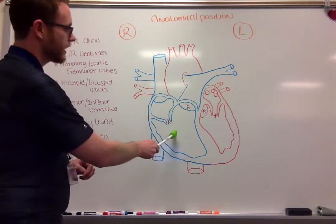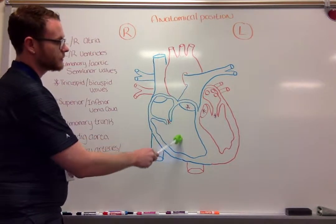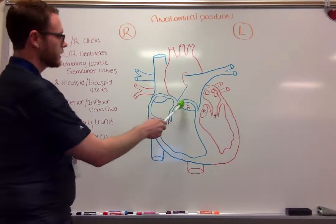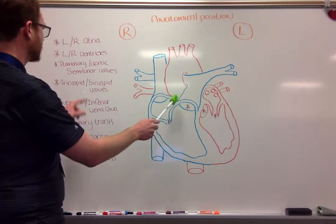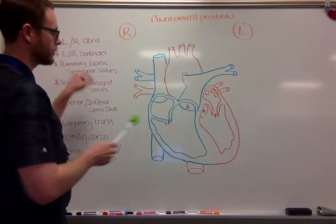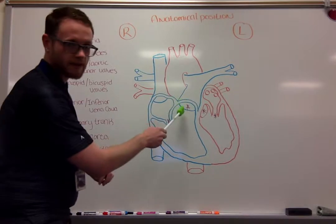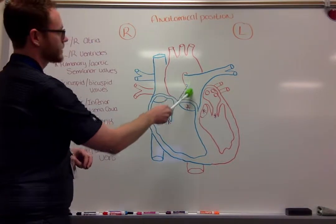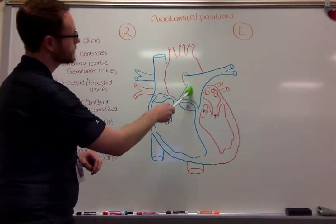From our right ventricle, we are going to be pushing that blood through our first semilunar valve — our pulmonary semilunar valve — which is also in our pulmonary trunk.